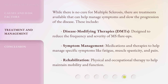While there is no cure for multiple sclerosis, there are treatments available that can help manage symptoms and slow the progression of the disease. These include disease-modifying therapies (DMTs), designed to reduce the frequency and severity of MS flare-ups. Symptom management — medications and therapies to help manage specific symptoms like fatigue, muscle spasticity, and pain. Rehabilitation — physical and occupational therapy to help maintain mobility and function.